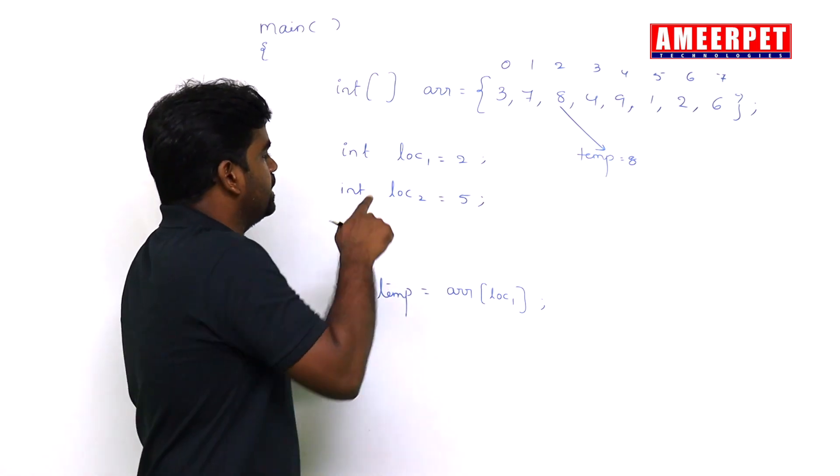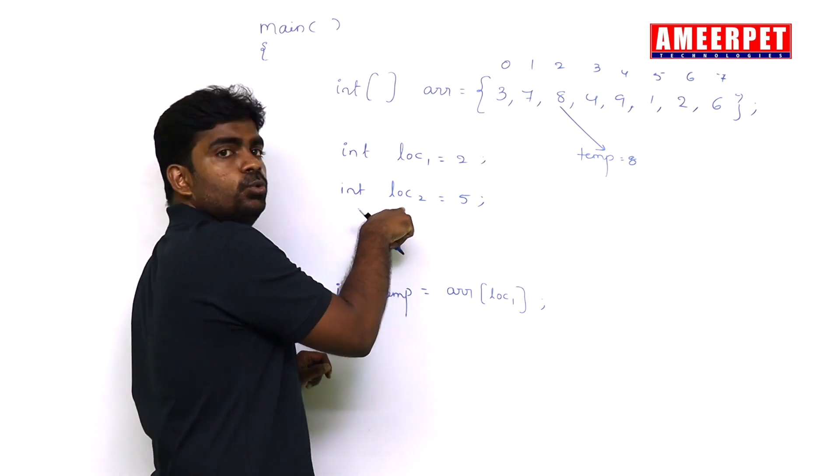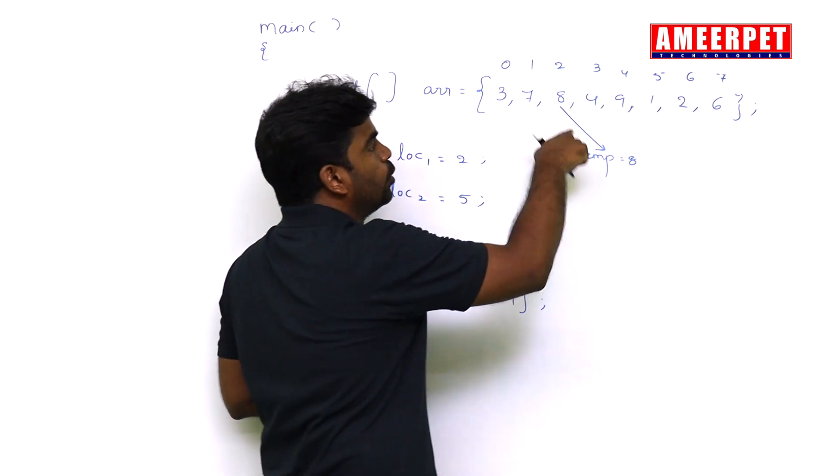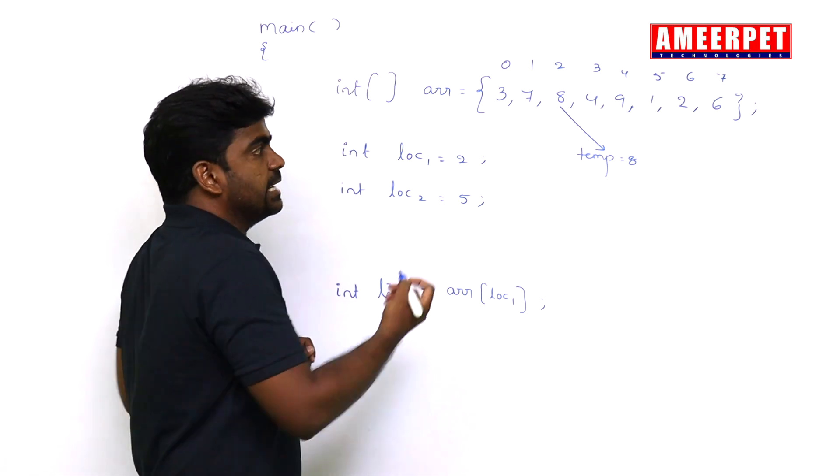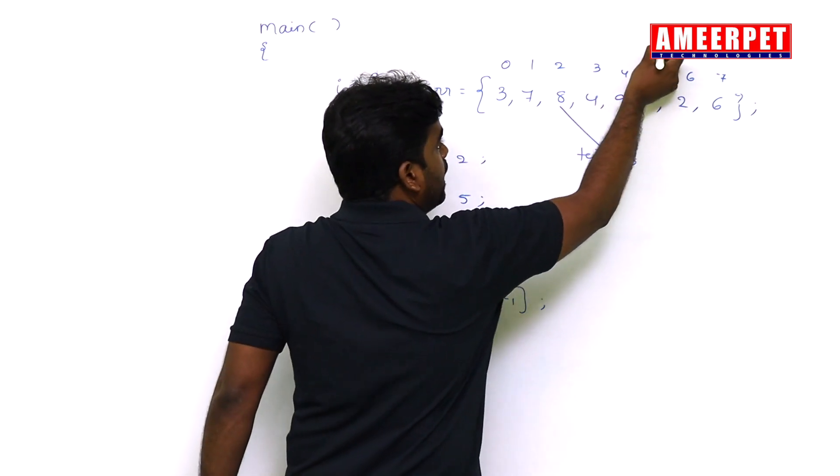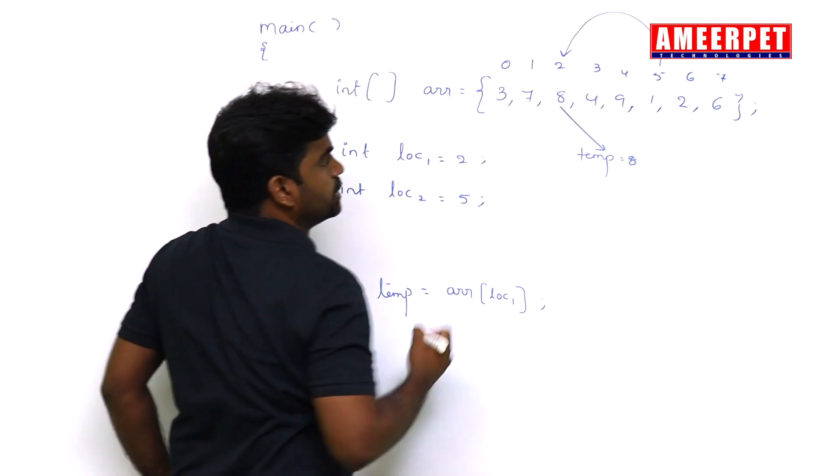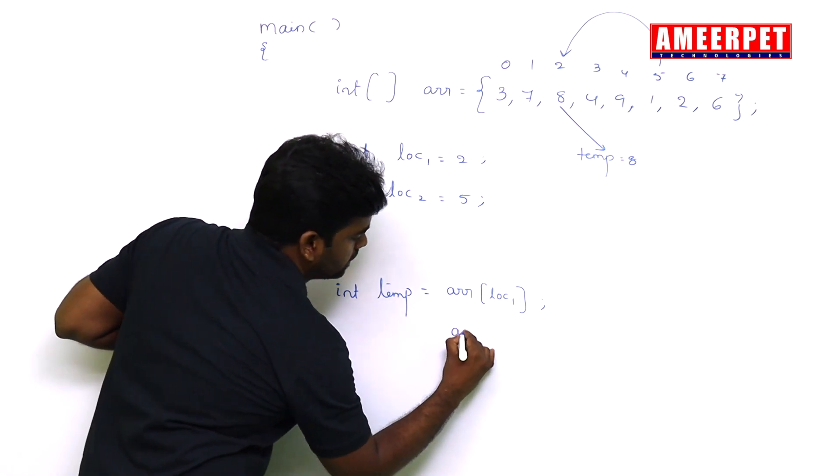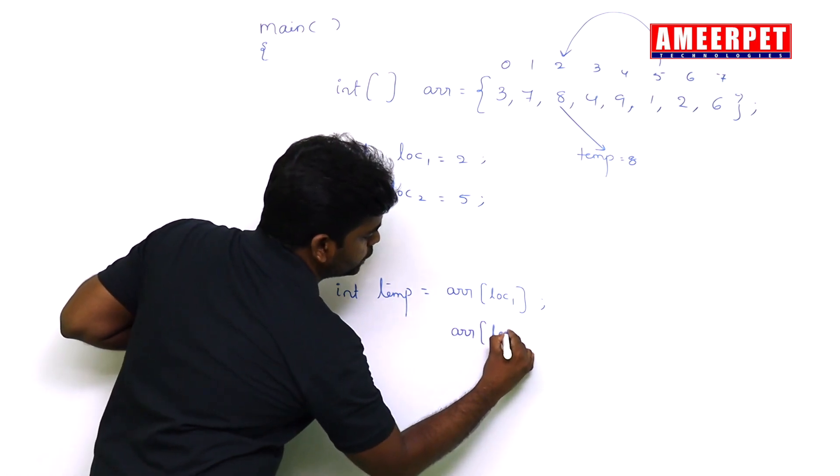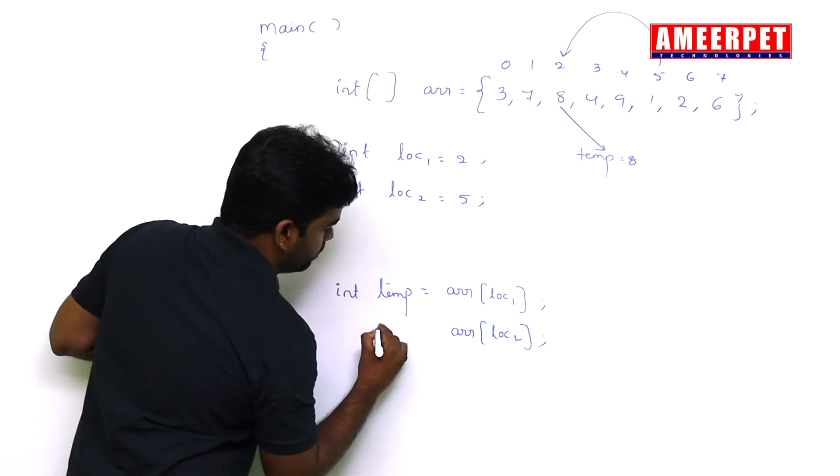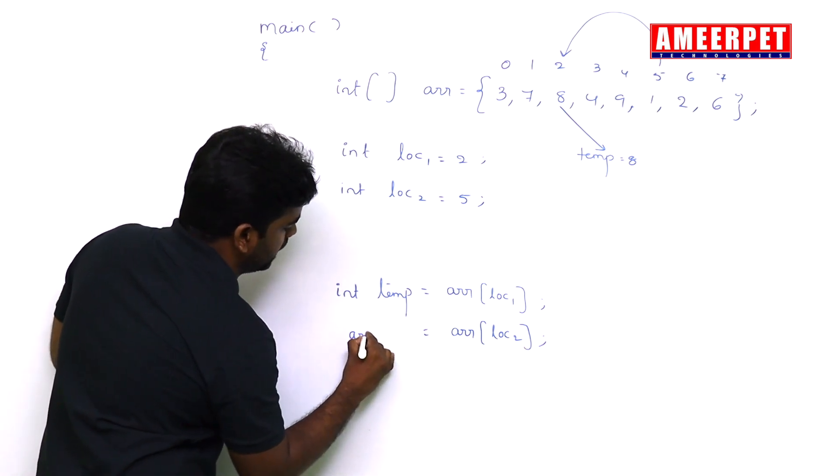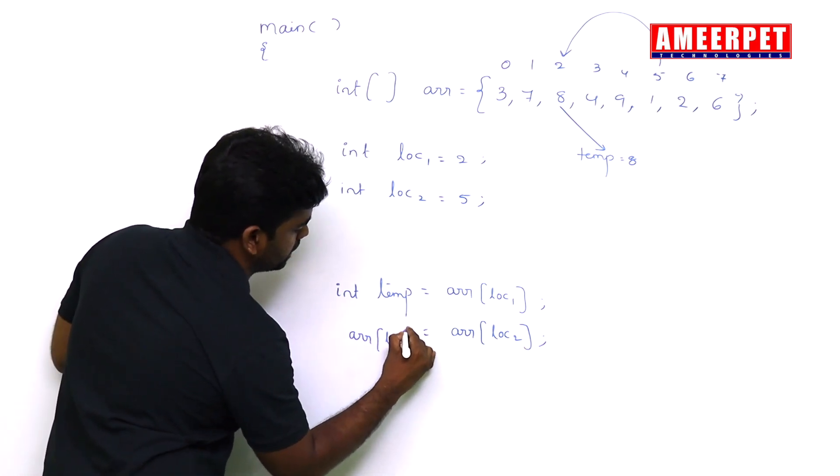The next one is the next location, location 2 element we are storing into location 1. This value I want to store into location 1. So here, that ARR of location 2 value will store into ARR of location 1.